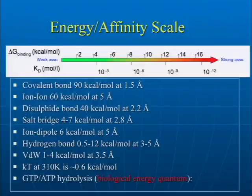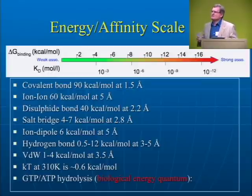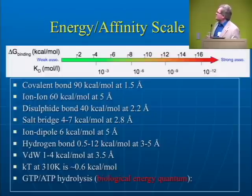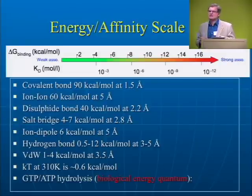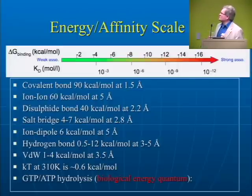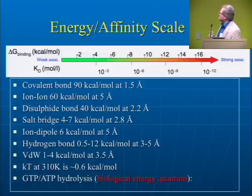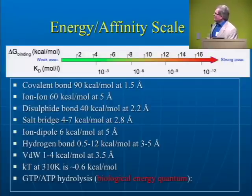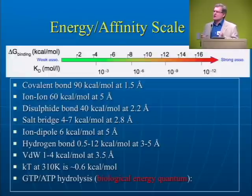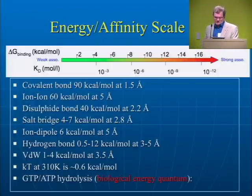It's important to keep in mind the energy scale in biology — these are all the important biological distances and energy scales, including affinity and reaction rates. I want to draw your attention to the bottom of the scale: GTP and ATP hydrolysis. That's probably the only time I'll mention quantum today — the biological energy quantum. GTP is between 2 and 10 kT, just above the threshold of noise. All biological processes use either GTP or ATP energy to continue.